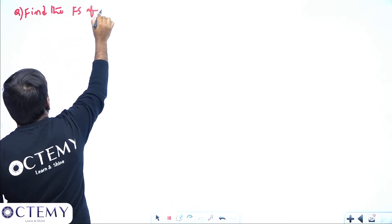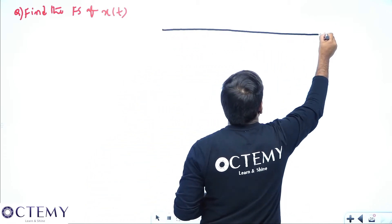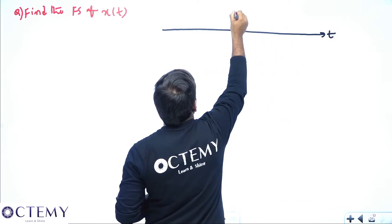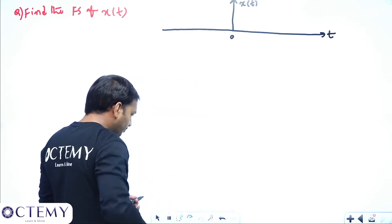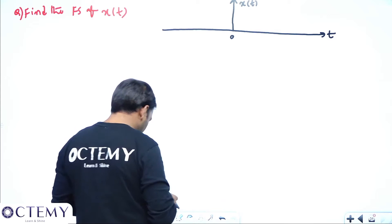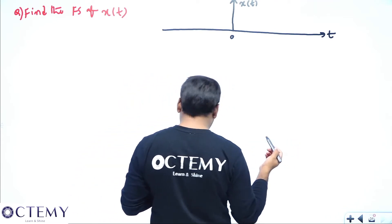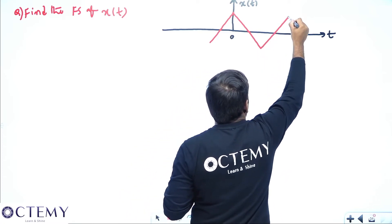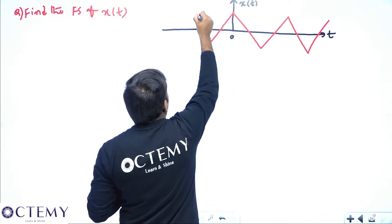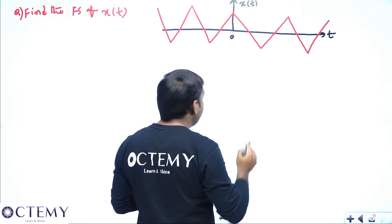The problem is: find the Fourier series of x(t). The picture of x(t) is given. This is a previous GATE problem. I will try to draw the picture. It is a triangular function — the picture given is a triangular function, and it is periodic.